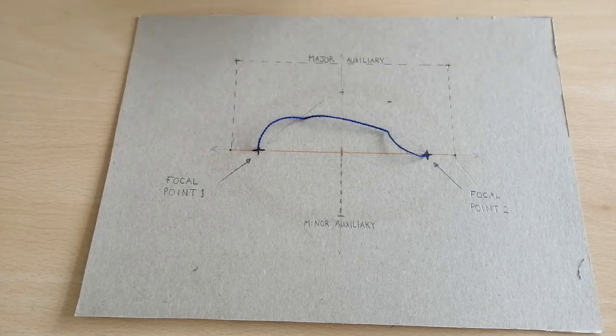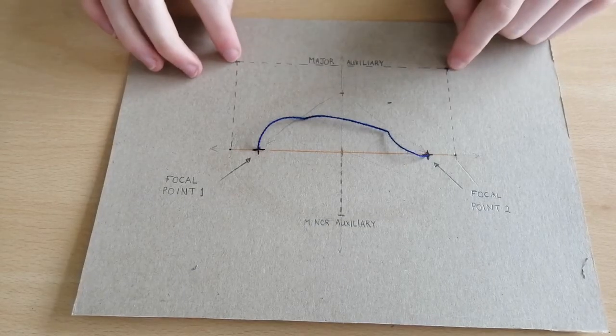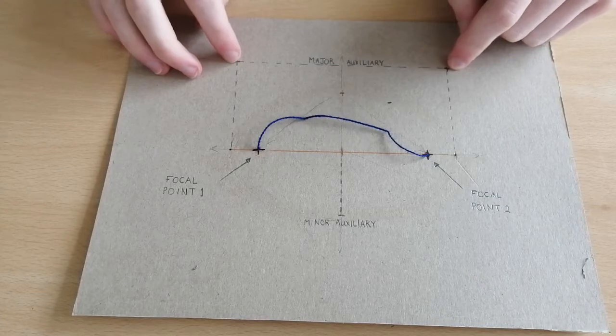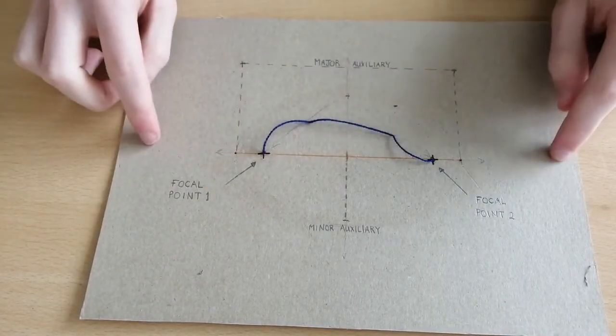Now let's talk about a few of the key features of an ellipse. The first of which is our major auxiliary, which is the widest length that our ellipse can be. And this is found along our major axis.